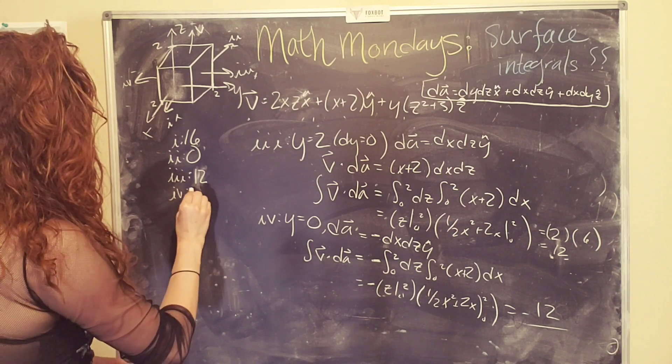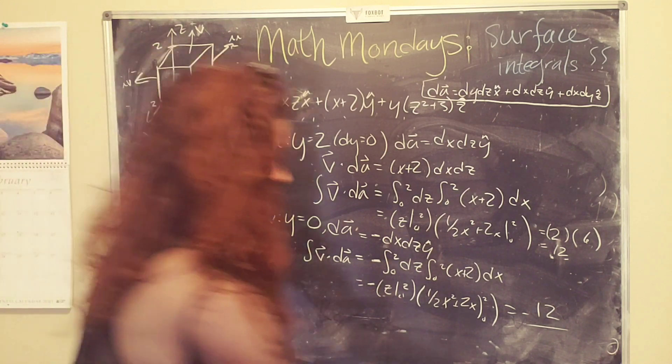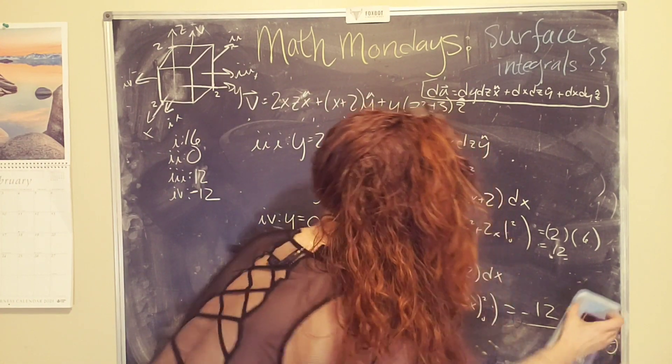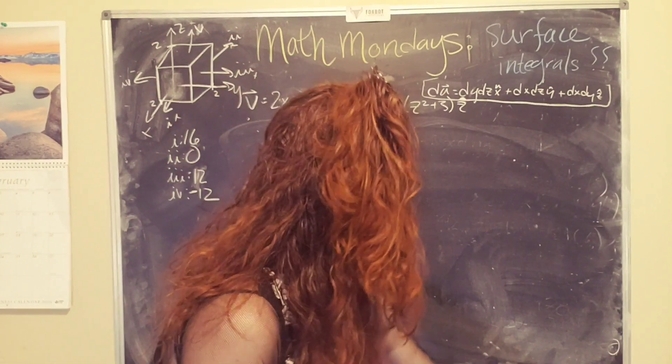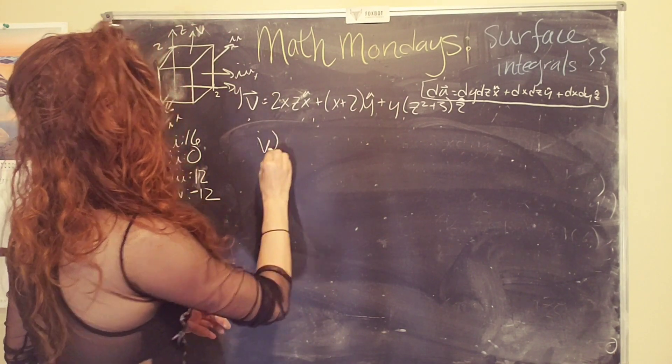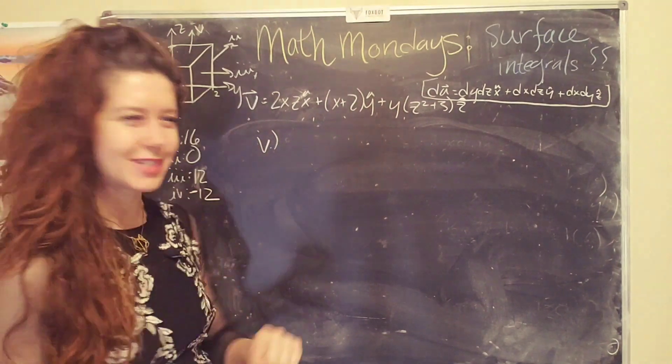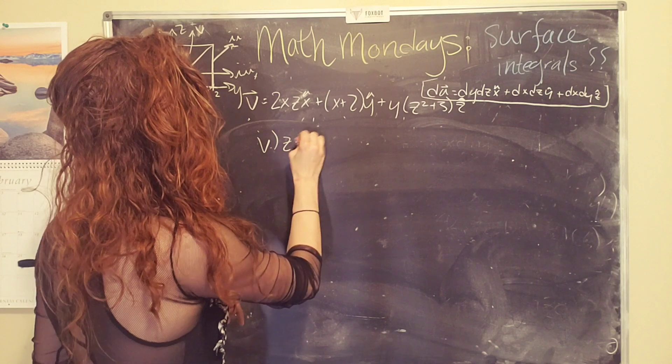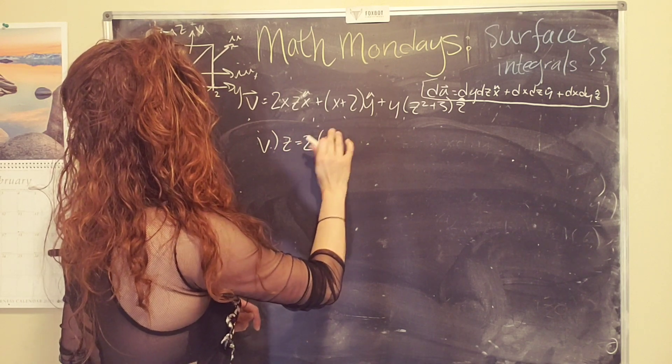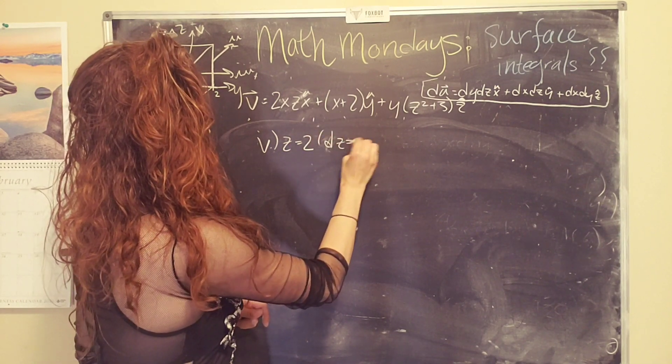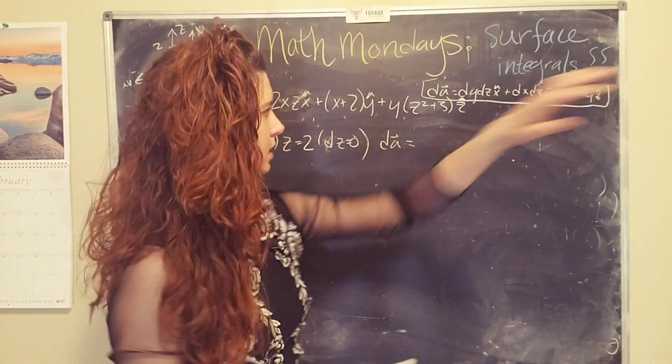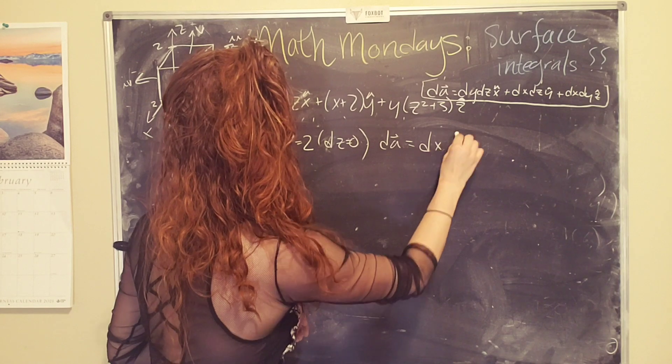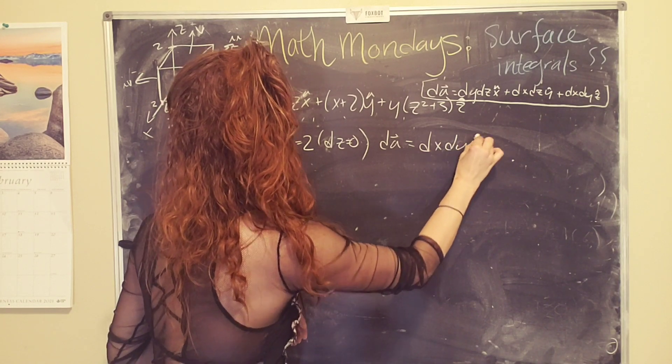One more surface. All right. And now I need more space for our last and final surface. Yay. Okay. Okay. So surface five, in this case, z is constant and dz, wow, dz is zero. Okay. So now we have dA only in the z direction equals dx dy z hat.